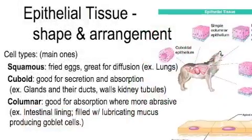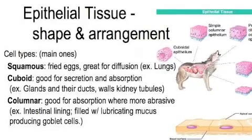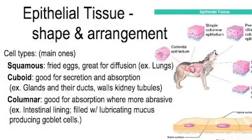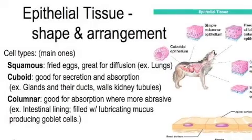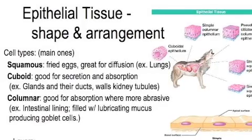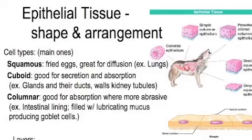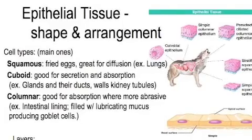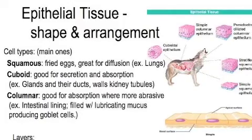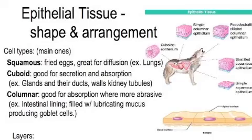The cells making up epithelial tissue come in different shapes. Squamous cells look like fried eggs and are great for diffusion — things can pass right through them. For example, in the lungs' alveoli, where oxygen needs to enter the blood, these flat cells are paper thin and oxygen goes right through. Cuboidal cells are very good for secretion and absorption; they look cube-shaped and are found in glands and their ducts as well as the walls of kidney tubules. Columnar cells are good for absorption in places with more abrasion, such as the intestinal lining.